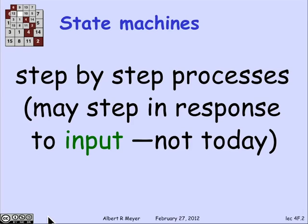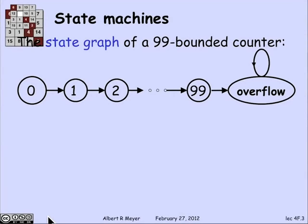The general model of a state machine involves the idea that you can give it input and it responds to them, but we don't really need that for our purposes. So let's look at an example of a state machine. Here's a particularly simple one — a description of a state machine that counts to 99.